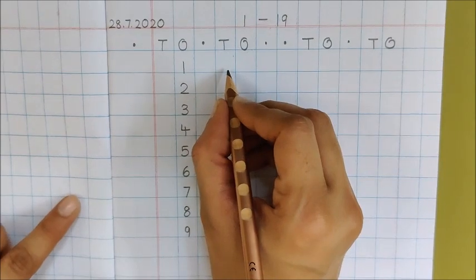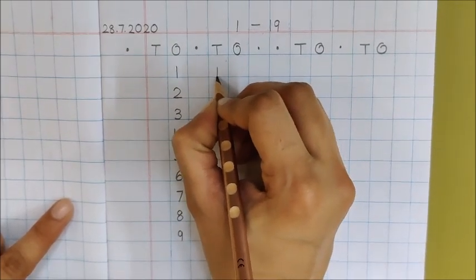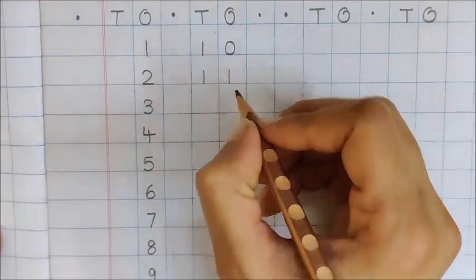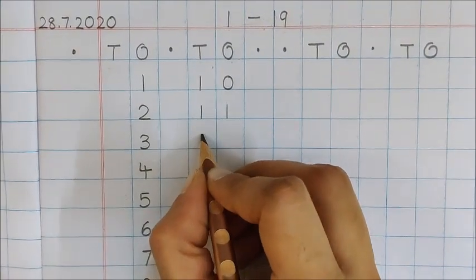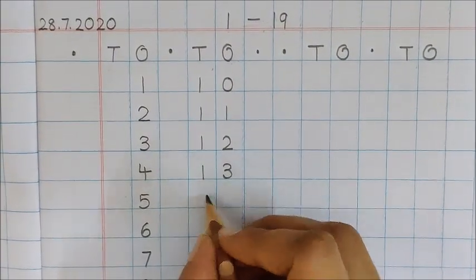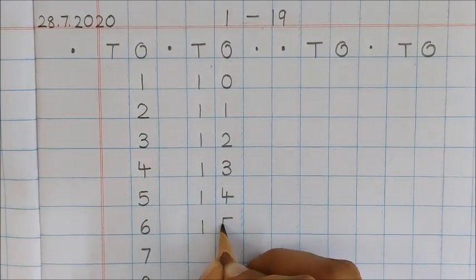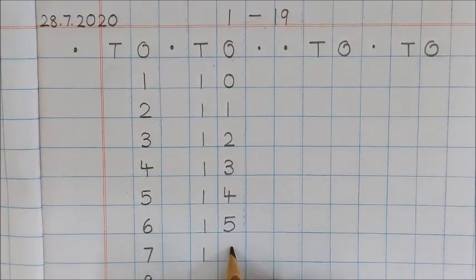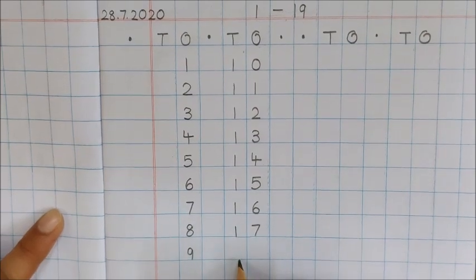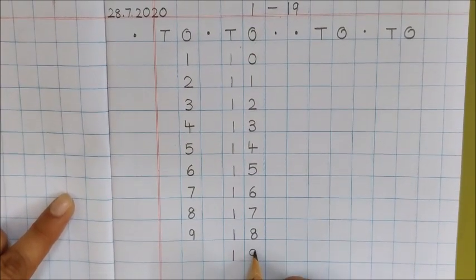To write number 10, you have to go to the new house. Remember this — don't write below the dot, write under the 10's house. 1 ten and 0 extra is number 10. 1 ten and 1 extra is number 11. I hope you are saying and writing with me. 1 ten and 2 extra is number 12. 1 ten and 3 extra is number 13. 1 ten and 4 extra is number 14. 1 ten and 5 extra is number 15. 1 ten and 6 extra is number 16. 1 ten and 7 extra is number 17. 1 ten and 8 extra is number 18. 1 ten and 9 extra is number 19.